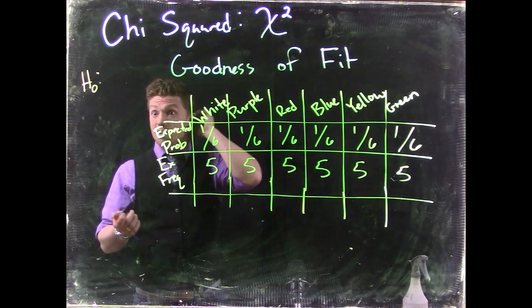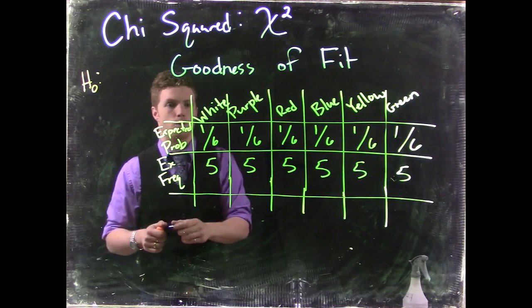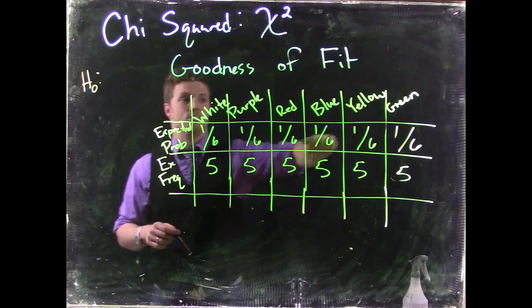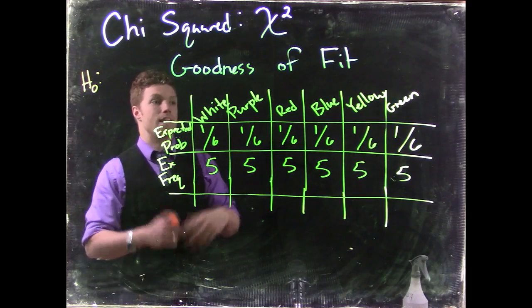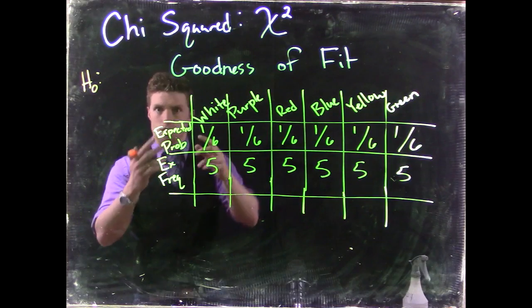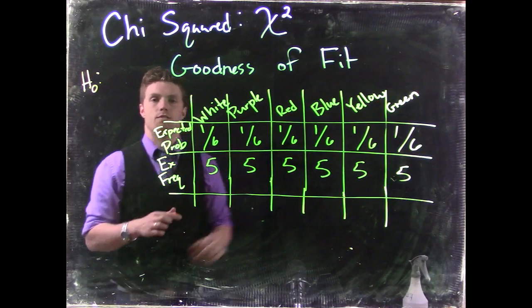Like maybe we manufacture loaded dice, and we're trying to get these probabilities to be one-third, one-third, one-third, and then zeros for these other outcomes so that it never comes up blue, yellow, or green. And then we could do our test to see if it followed that specific distribution.